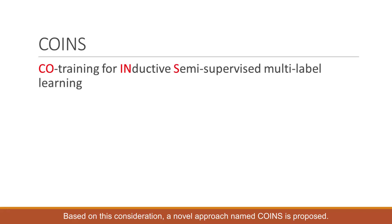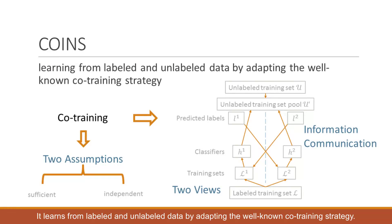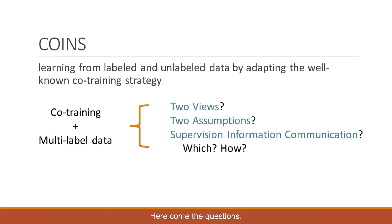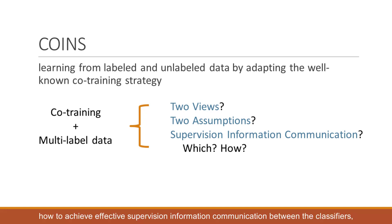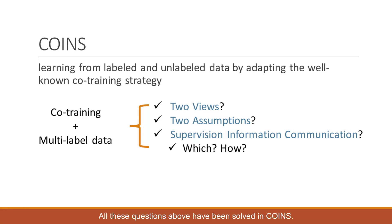Based on this consideration, a novel approach named COINS is proposed. It learns from labeled and unlabeled data by adopting the well-known co-training strategy. Key questions arise when applying co-training for the task of learning from multi-label data: how to split the single-viewed data into two views, how to satisfy the two assumptions, how to achieve effective supervision information communication between the classifiers, and which information should be communicated. All these questions have been solved in COINS. Let's get into the details.